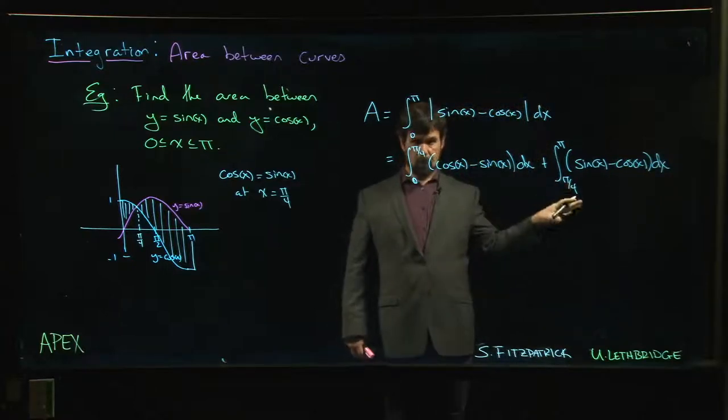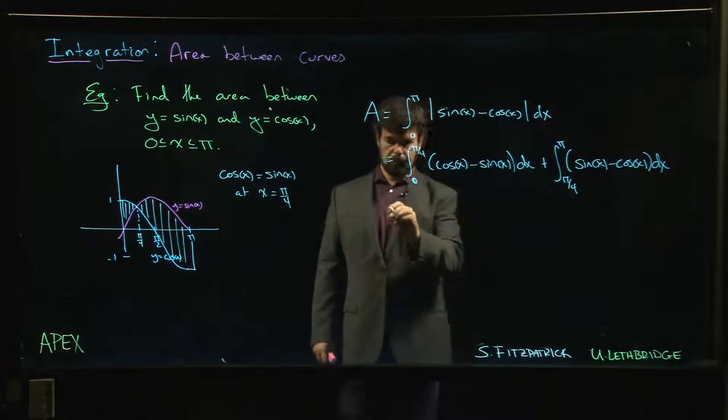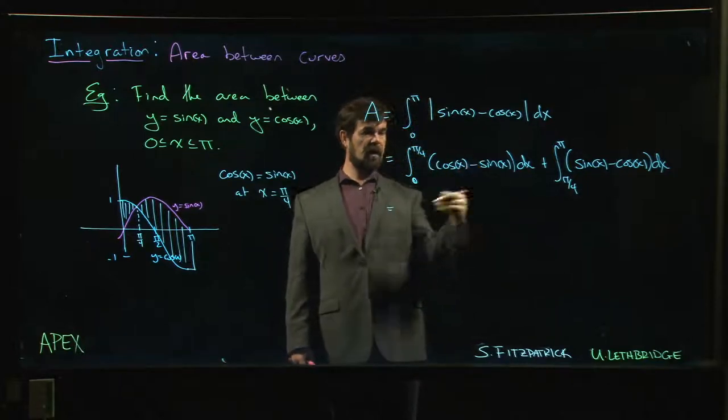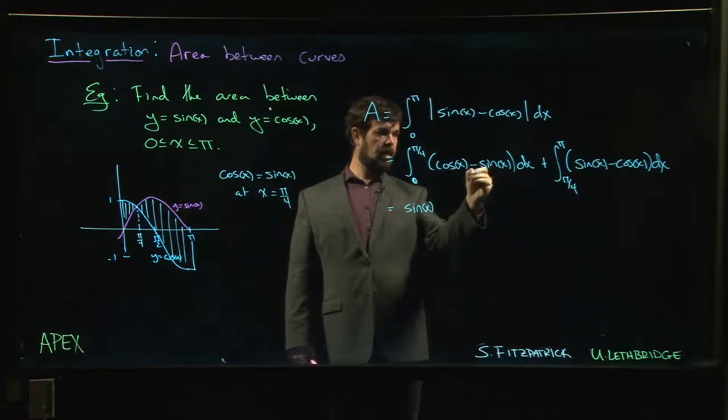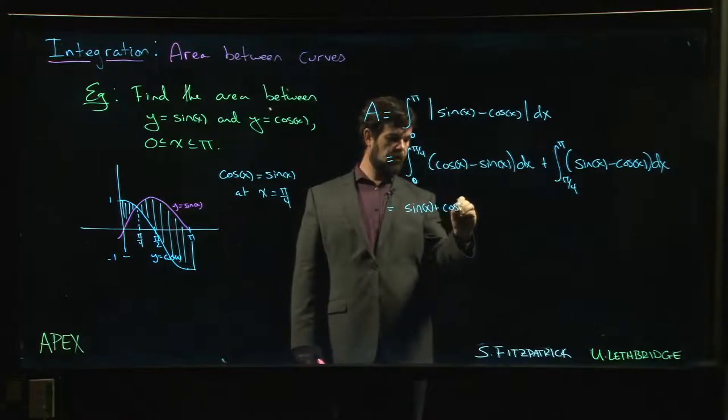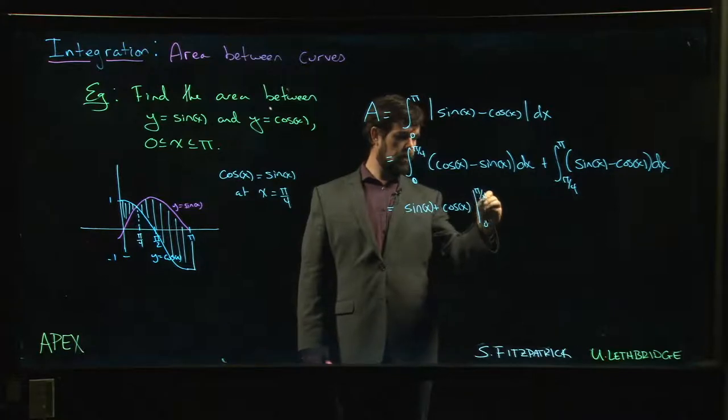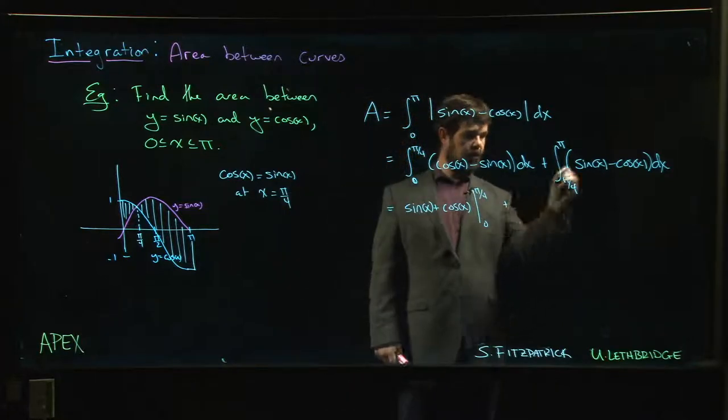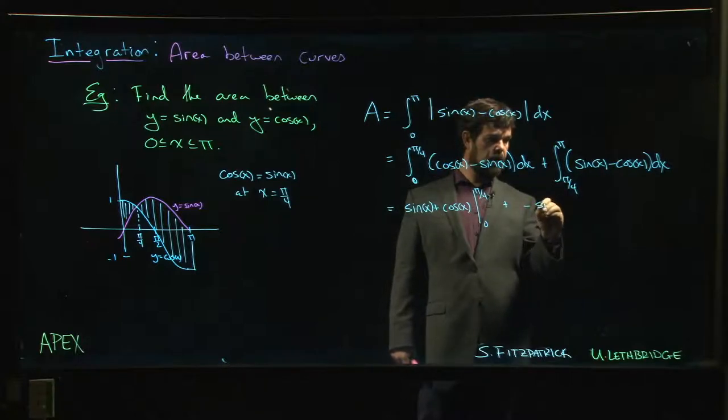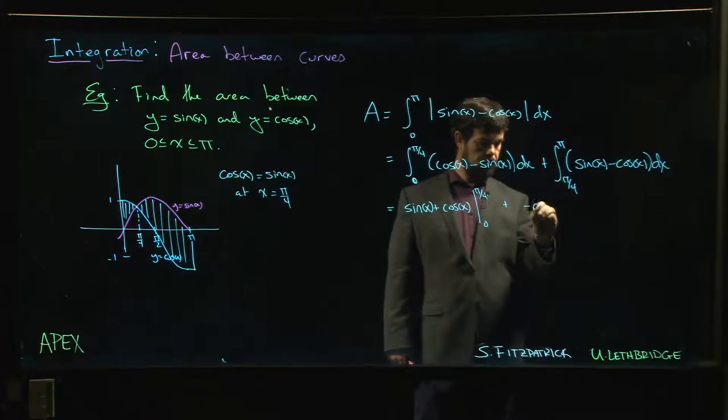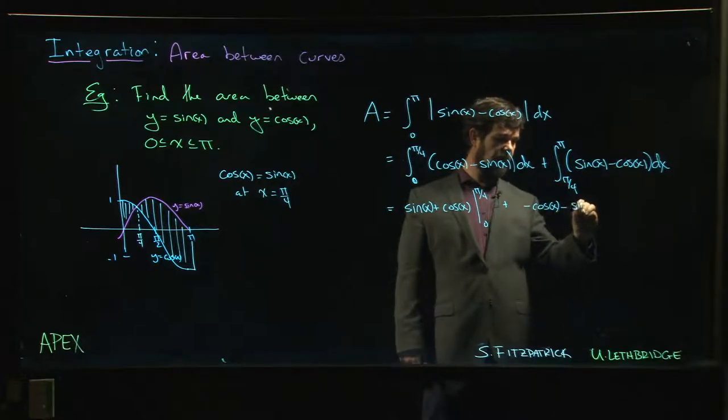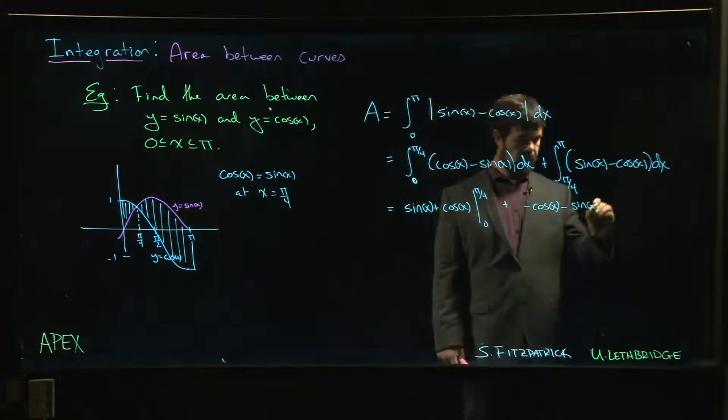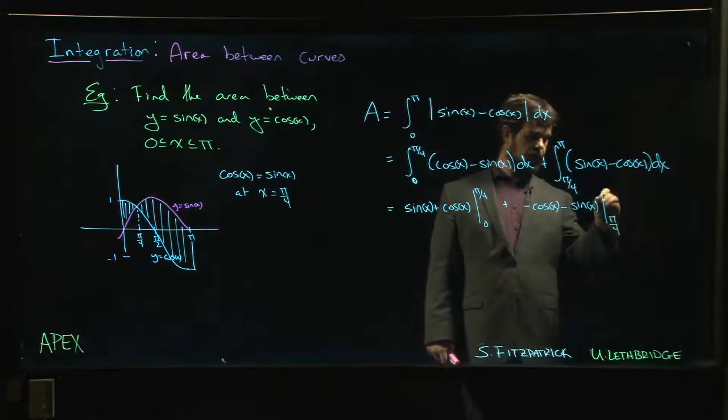Okay, once you realize that, the rest is exactly as you expect. Find the antiderivative, plug in the endpoints. So it's sin x plus cos x from 0 to π over 4, plus minus cos x—that's the antiderivative for sine—and antiderivative for negative cos is negative sine, and we're going to do that from π over 4 to π.